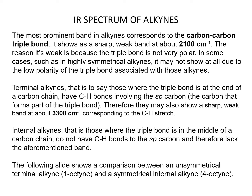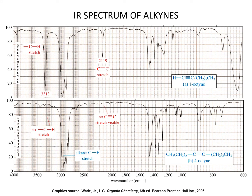Internal alkynes — those where the triple bond is in the middle of a carbon chain — do not have C-H bonds to the SP carbon and therefore lack that band. The following shows a comparison between an unsymmetrical terminal alkyne, 1-octyne, and a symmetrical internal alkyne, 4-octyne. We can assess that 4-octyne has no C-H triple bond stretch, whereas 1-octyne does. Both provide the alkane C-H stretch around 3000. The carbon-triple bond-carbon band for 1-octyne appears around 2119, whereas for 4-octyne it is absent.